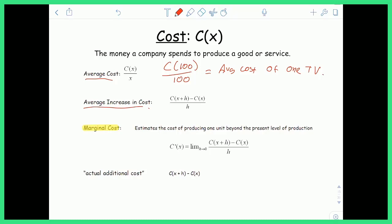An average increase in cost is basically if I wanted to take a look at a different value. So instead of 100 TVs, I wanted to say what about 120 TVs? So I'm going to take the cost of 100 TVs and I'm going to go up another 20 TVs. So this value right here, C plus h, is basically the cost of producing your original 100 plus a little bit more. The cost of producing 120 TVs,